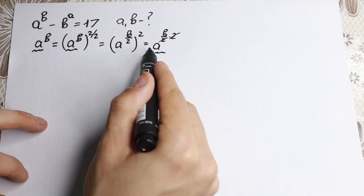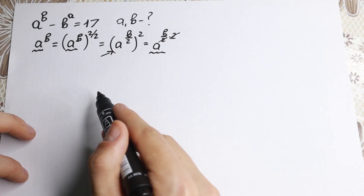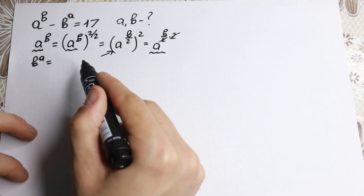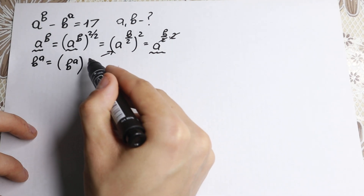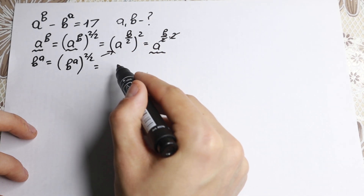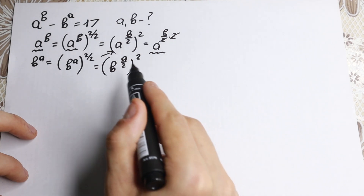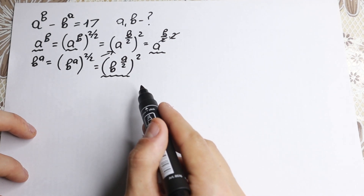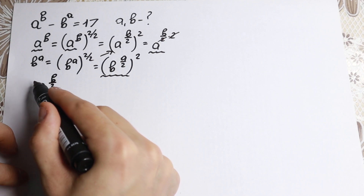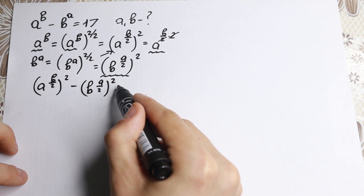Now for b to the power a, we apply the same trick: b to the power a raised to the power 2 over 2, which we rewrite as b to the power a over 2, raised to the power 2. So our original equation becomes: a to the power (b/2) squared minus b to the power (a/2) squared equals 17.